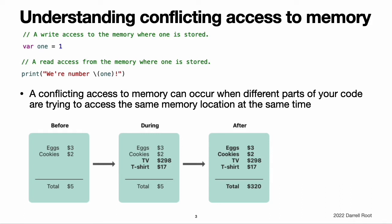Updating the budget is a two-step process. First, you add the items' names and prices, and then you change the total amount to reflect the items currently on the list. Before and after the update, you can read any information from the budget and get a correct answer, as shown in the figure below. While you are adding items to a budget, it is in a temporary invalid state because the total amount has not been updated to reflect the newly added items. Reading the total amount during the process of adding an item gives you incorrect information.